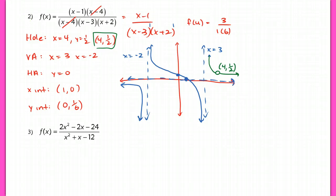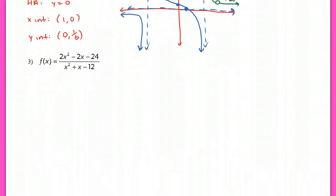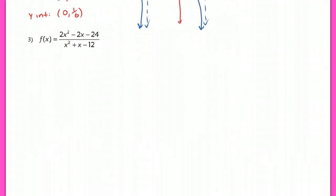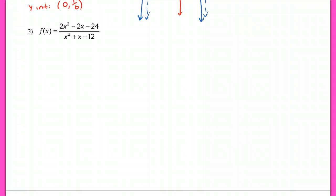I'm going to let you do number 3 and check the key. Make sure you're finding all of your important information, and since it is supposed to cross the horizontal asymptote, make sure you get either an x- or y-intercept that does cross.